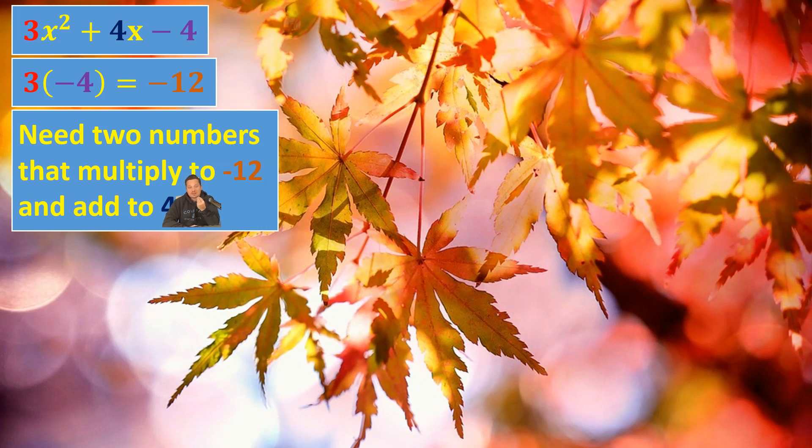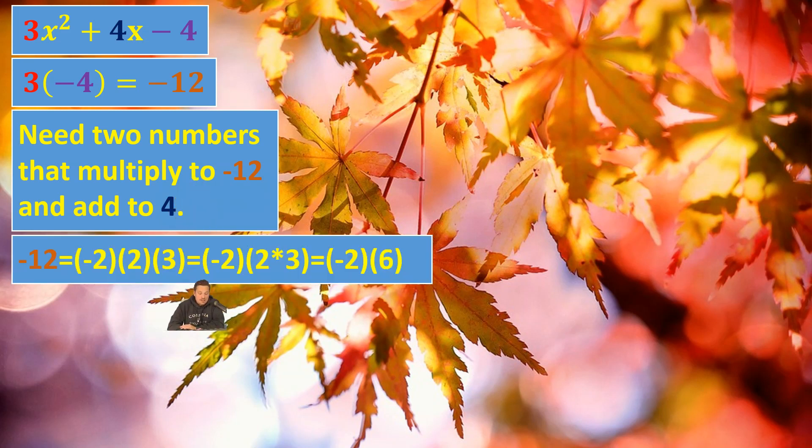That 4 is the coefficient on the x in the middle term. So how do you find those two numbers? That can be a bit of a tricky, long process. Sometimes you just do guess and check. So what I mean by that is the following.